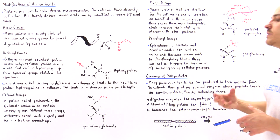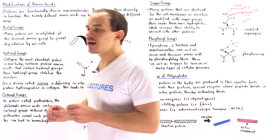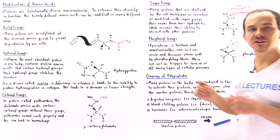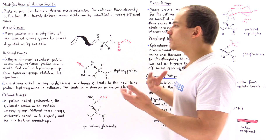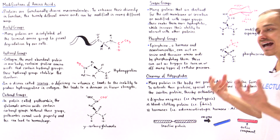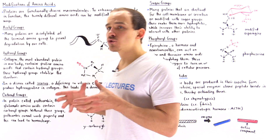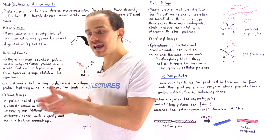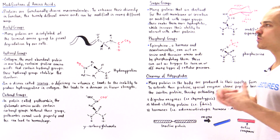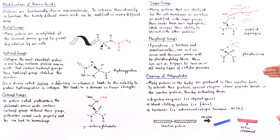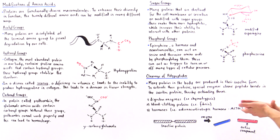Many proteins inside our body are also modified by adding carbohydrate components, known as glycosylation. Proteins destined for the cell membrane or outside the cell are modified in this way. Adding carbohydrate components increases the polarity and hydrophilic nature of those proteins, allowing them to interact better with other proteins and hydrophilic molecules. For example, the amino acid asparagine can be modified by the addition of a sugar component, and the resulting hydroxyl groups increase the hydrophilic nature of that protein.